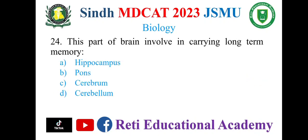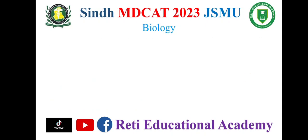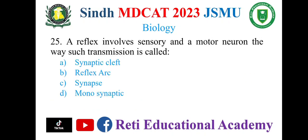Which part of the brain is involved in carrying long-term memory? A. Hippocampus, B. Pons, C. Cerebrum, D. Cerebellum. The correct option is A. Hippocampus. Question number 25.